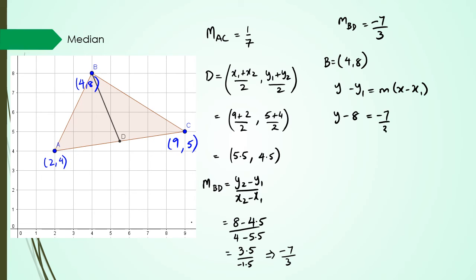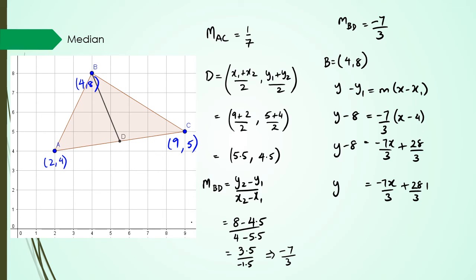Expanding: y = −7x/3 + 28/3 + 8. Converting 8 to thirds gives 24/3, so 28/3 + 24/3 = 52/3. Therefore the equation of the median BD is y = −7x/3 + 52/3.